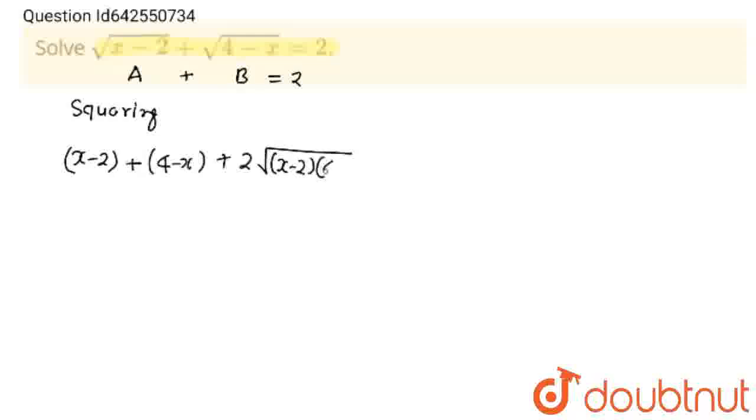This will become x minus 2 into 4 minus x is equal to 2. So this x, x will get cancelled out and 4 minus...